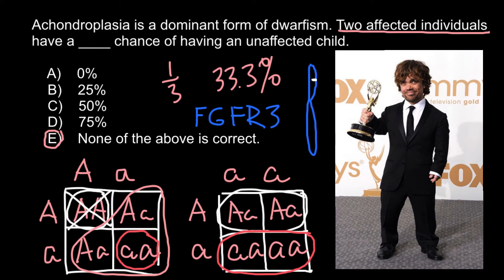If a couple has one person with this genetic condition and wants to ensure their progeny won't inherit it, they can do in vitro fertilization: take an egg from the mother, a sperm from the father, fertilize the eggs, and then before implanting, take a small sample. If the sample doesn't carry the defective allele, the fertilized egg cell is implanted. This way the couple would escape the 50-50 chances and be assured of 100% probability that their progeny would be phenotypically normal.